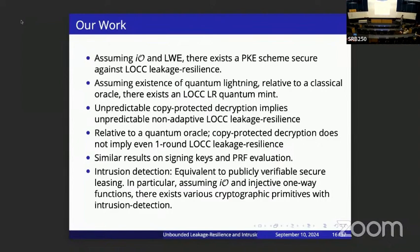In terms of connections to previous notions, we show that in the most basic setting, LOCC leakage resilience is implied by copy protection — specifically, unpredictable copy protection implies non-adaptive, single-round leakage resilience in an unpredictability setting. We also have similar results on different cryptographic notions like signature schemes and pseudorandom function keys.